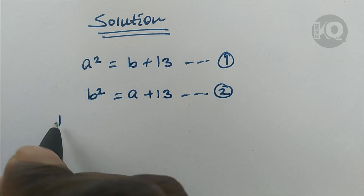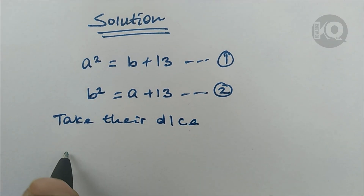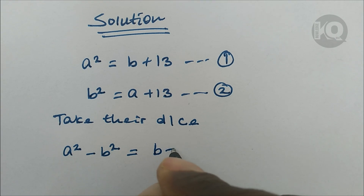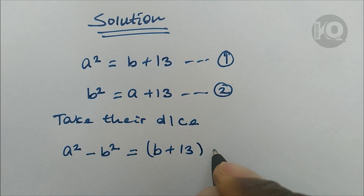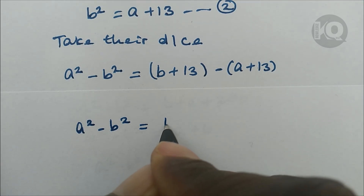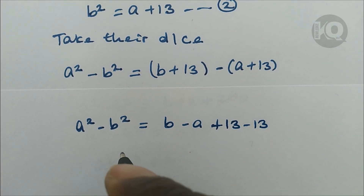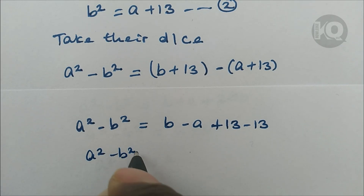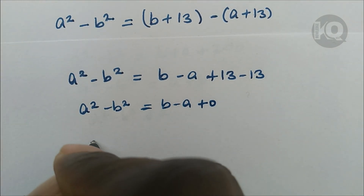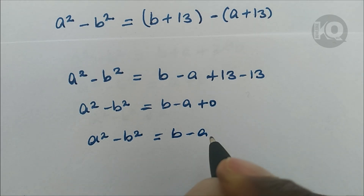In the second step, let's take their difference. We get a squared minus b squared equals b plus 13 minus (a plus 13), which simplifies to a squared minus b squared equals b minus a, since the 13s cancel.